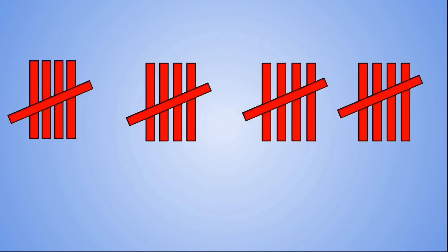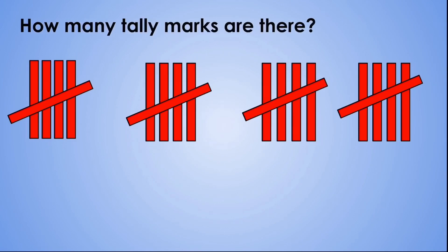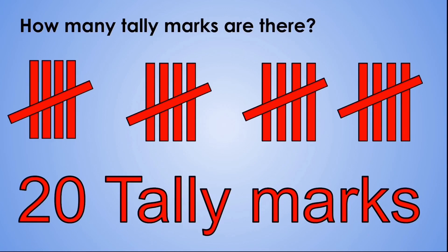Now remember, when you see a bunch of tally marks stacked up like this, you can skip count in fives. So let's see — how many tally marks are there? Let's count together: 5, 10, 15, 20. There are 20 tally marks.